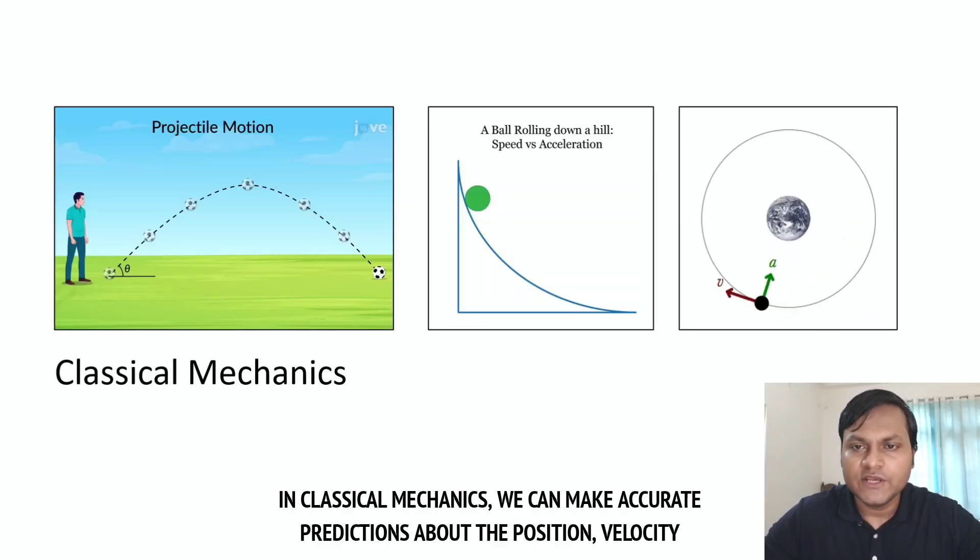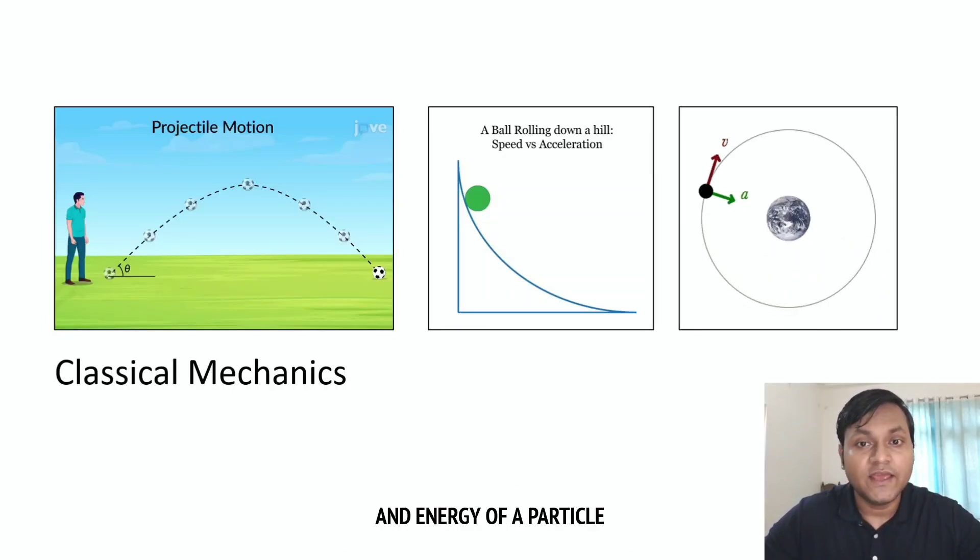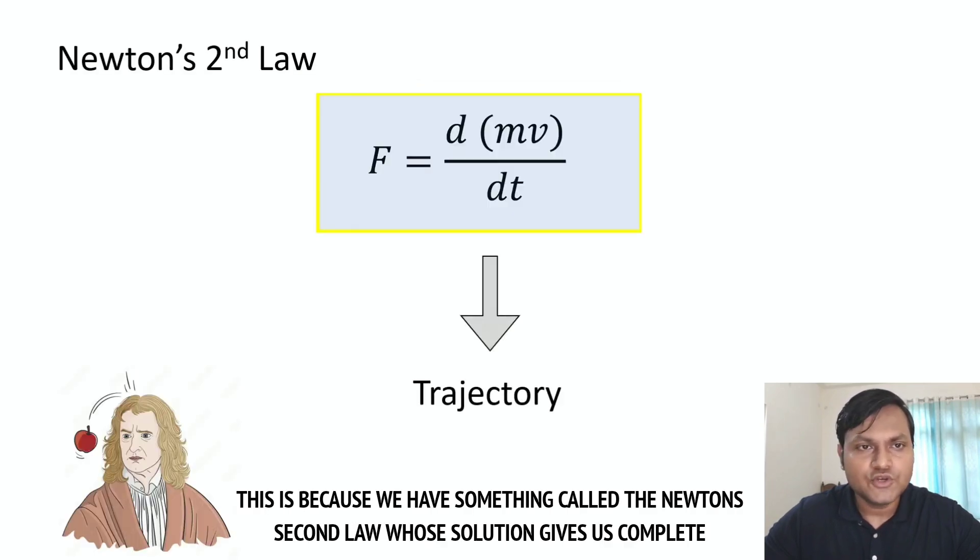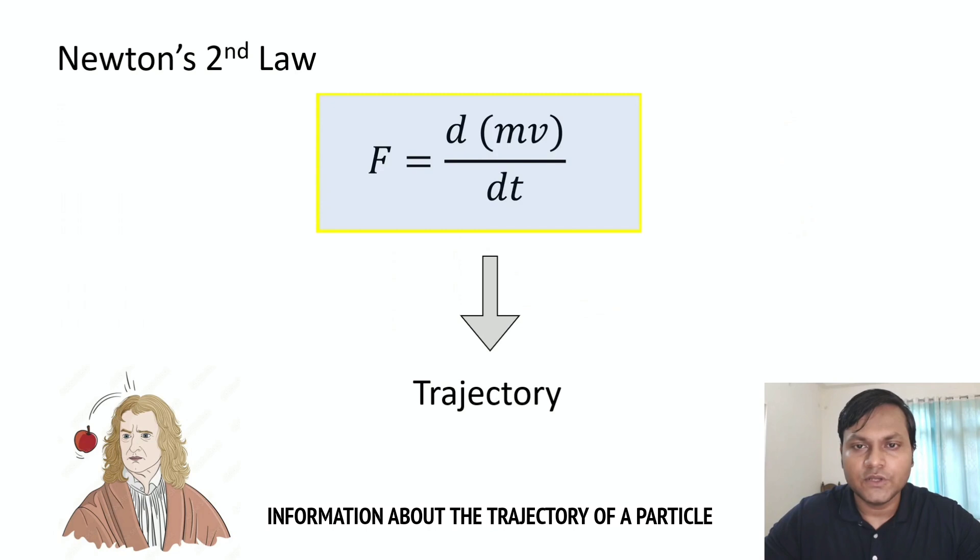In classical mechanics, we can make accurate predictions about the position, velocity, and energy of a particle. This is because we have something called Newton's second law, whose solution gives us complete information about the trajectory of a particle.